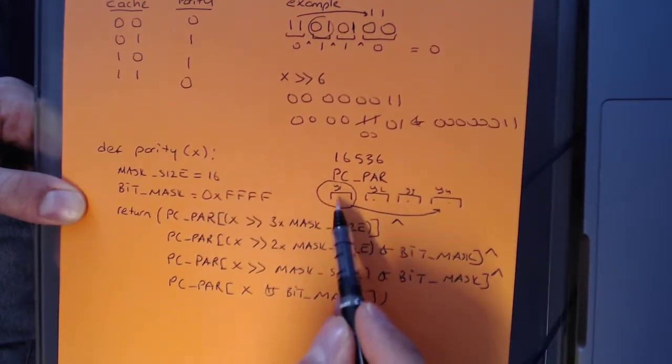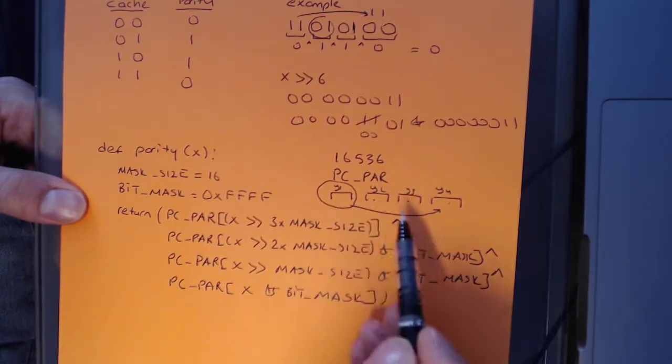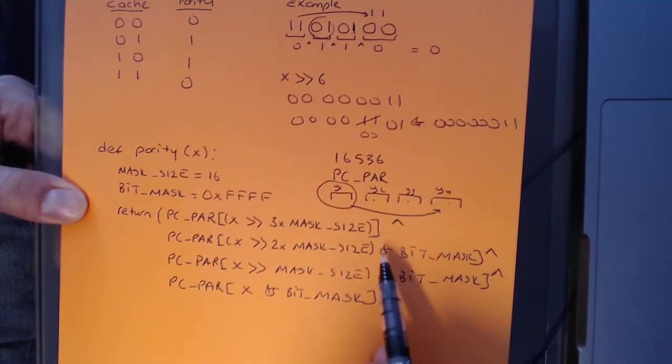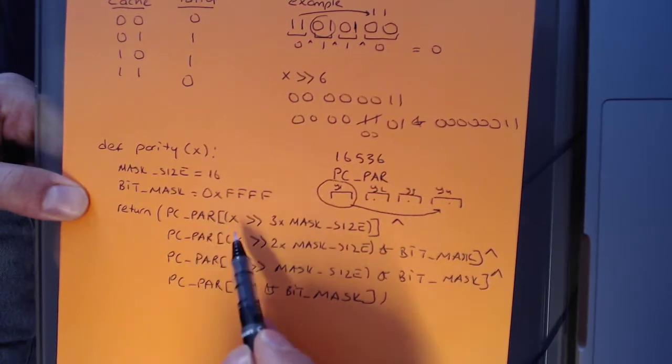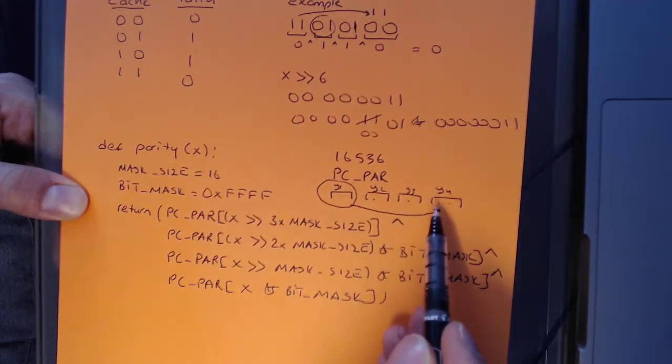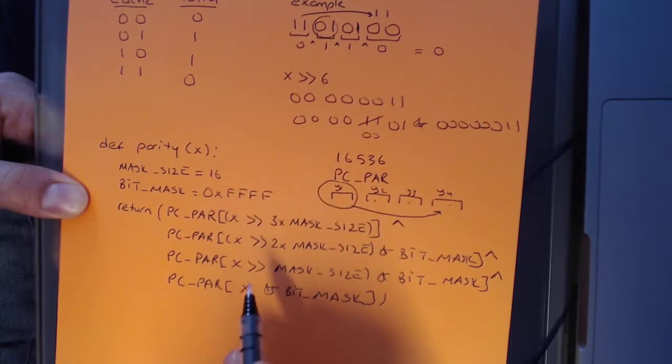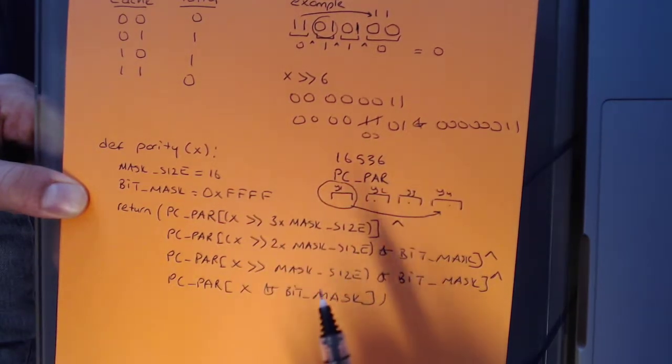So what I had to do was, I'm going to take y1, which is the most significant 16 bits in my 64 bit, shift it by 48, and lookup in my cache. And then I do it for the second 16-bit chunk, and the third 16-bit chunk, and the fourth 16-bit chunk. And when I XOR that, I return the result of a parity of a 64-bit integer.